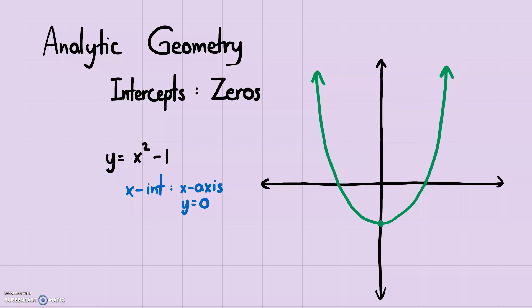When y = 0, that's right on the x-axis line — that's the x-intercept. Similarly, the y-intercept is the point where the graph crosses the y-axis, or when x = 0. On the x-intercept y = 0; on the y-intercept x = 0. On this parabola graph there are actually two x-intercepts — the two points where it crosses the x-axis — and one y-intercept where it crosses the y-axis.